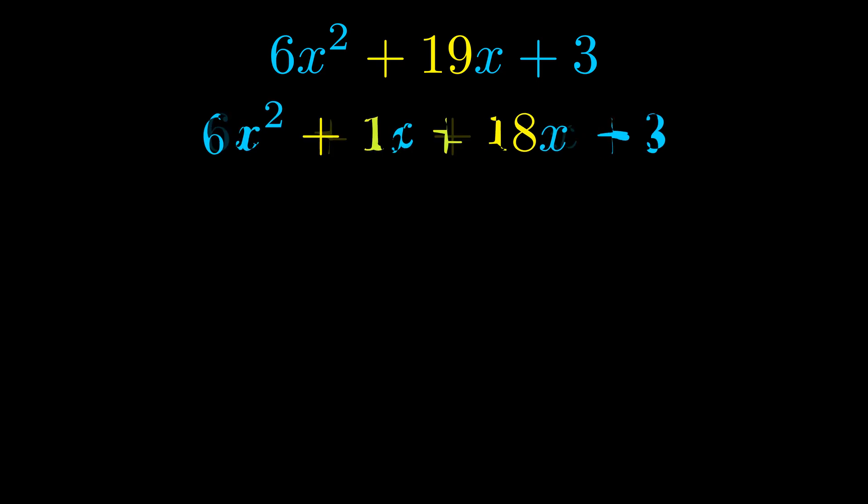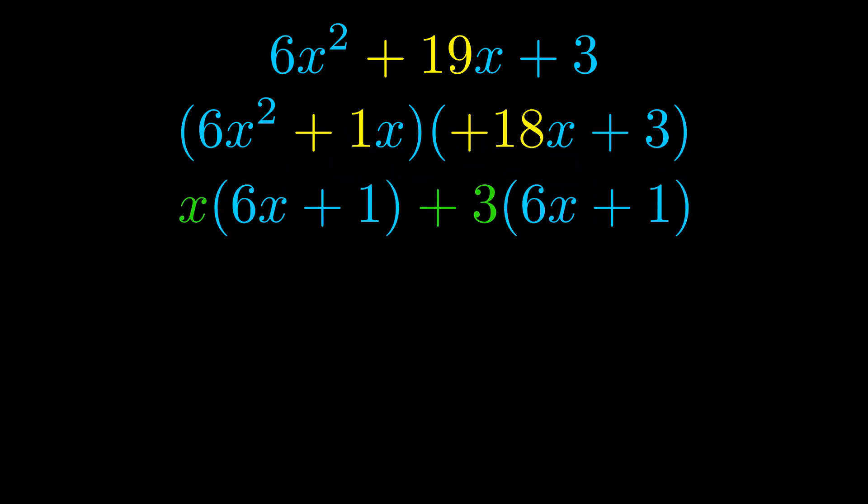Once we've done this we go ahead and we put parentheses around the first term and the last term. And we do that so that we can take the greatest common factor out of both terms. We can see the greatest common factor is now outside in green.